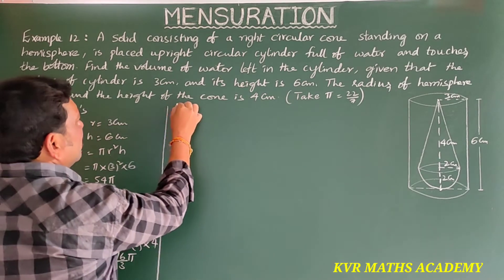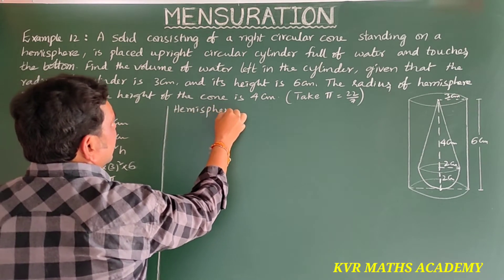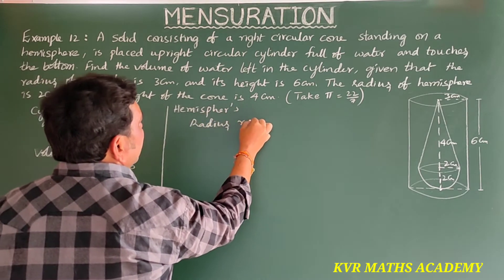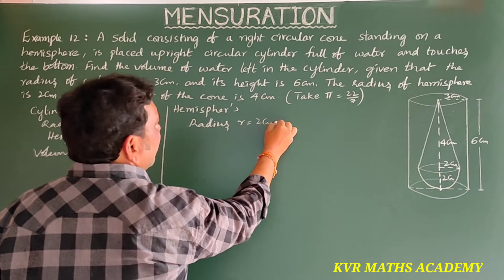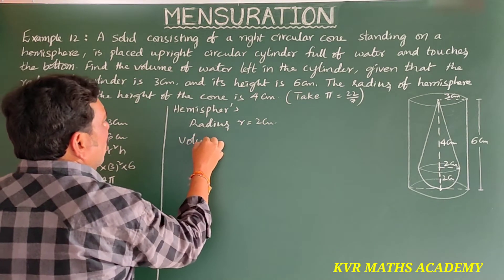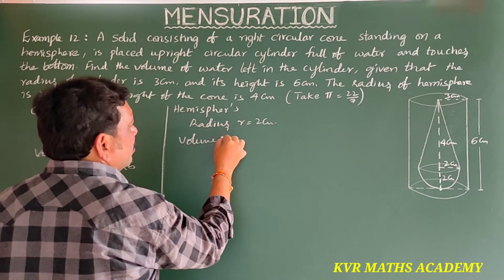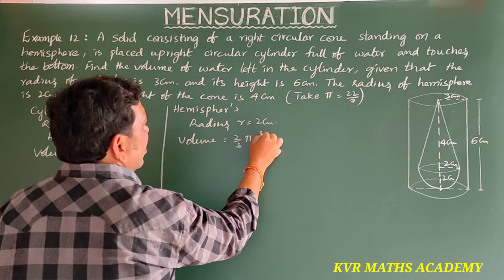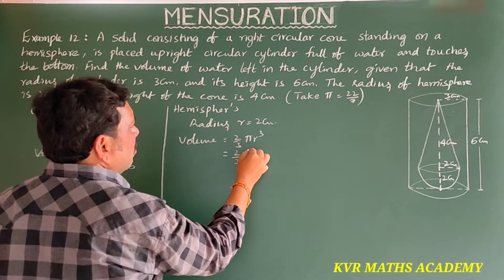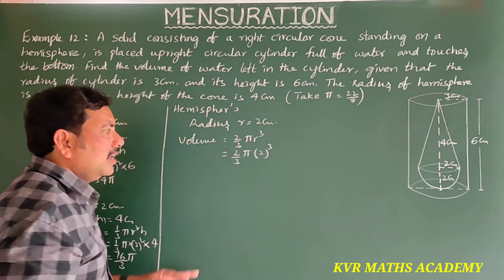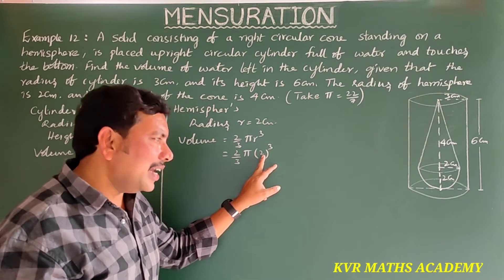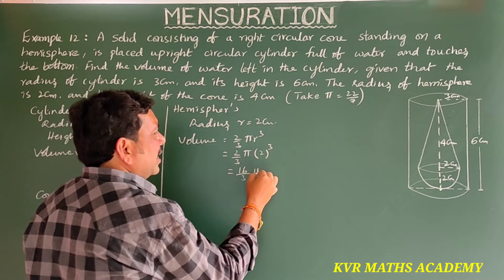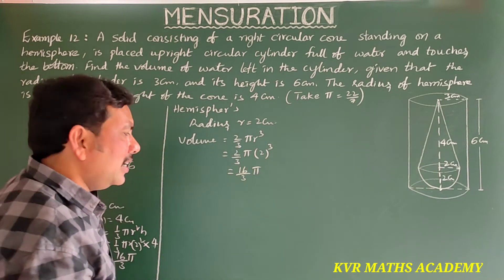Now for the hemisphere: radius R is equal to 2 cm. Volume of the hemisphere is 2 by 3 pi R cubed, that is 2 by 3 into pi into 2 cubed. 2 cubed is 8, and 2 into 8 is 16. So volume of the hemisphere is also 16 pi by 3.